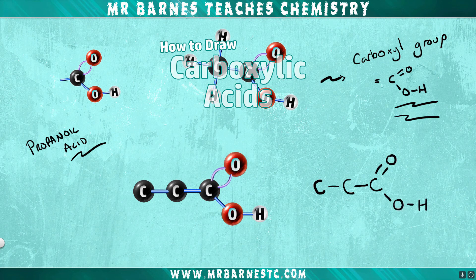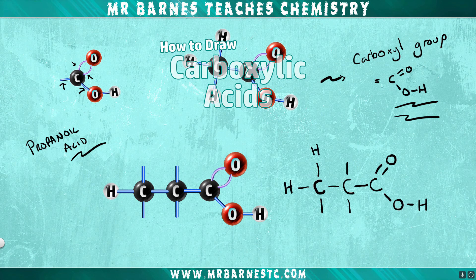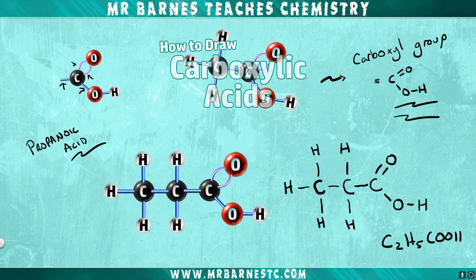The final thing to remember is that every carbon can make four covalent bonds, so we add up to four bonds for each of the carbons. Then all that's left is to add the hydrogens onto the incomplete bonds, giving us the formula C2H5COOH.